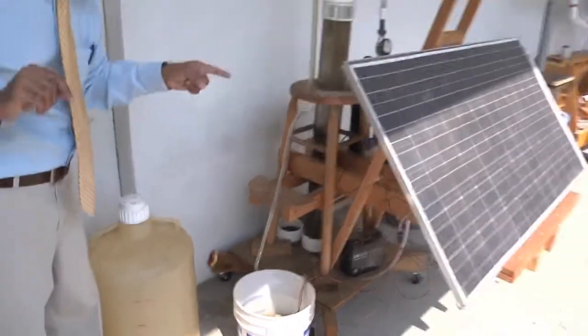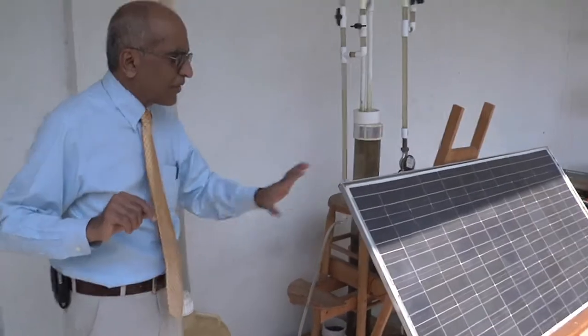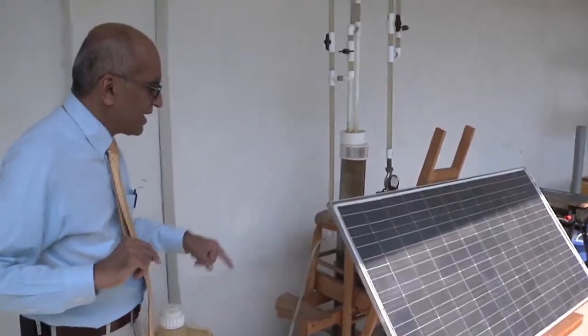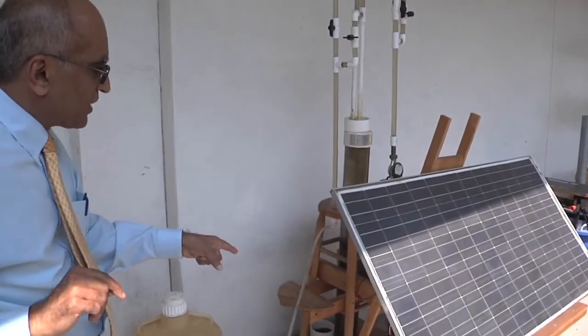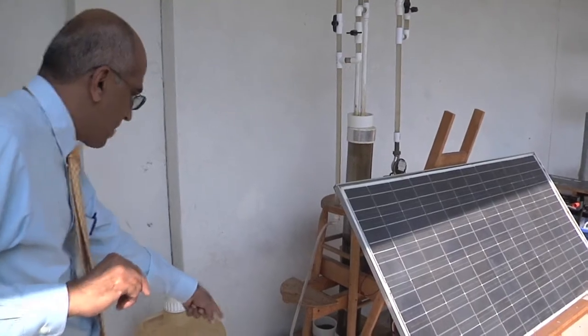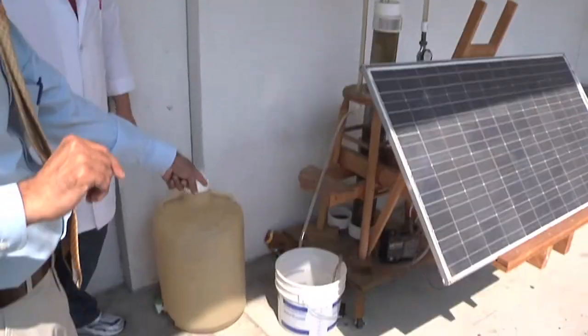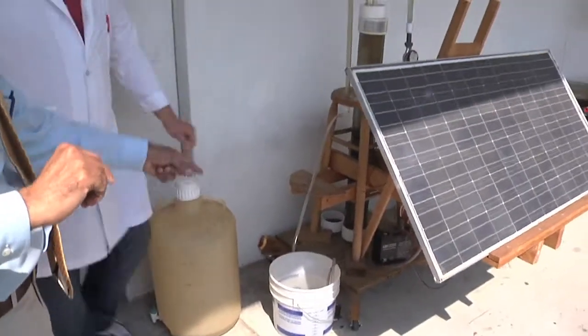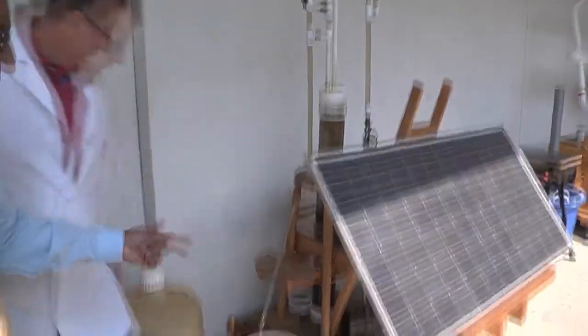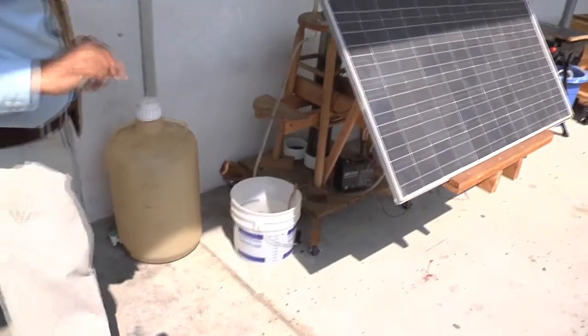This battery stores the energy when the sun is not shining, and we use the energy stored in the battery to run a pump that pumps water into the system. The dirty water comes in, as you can see.